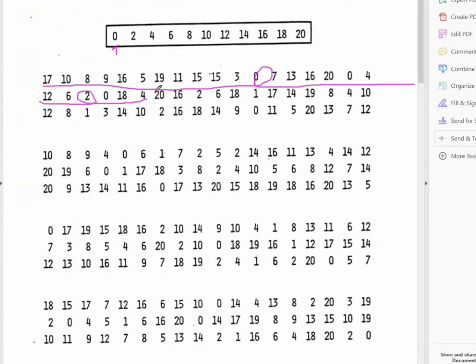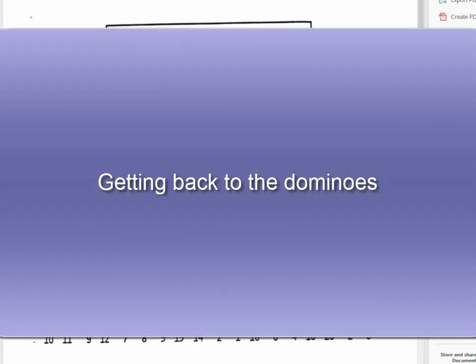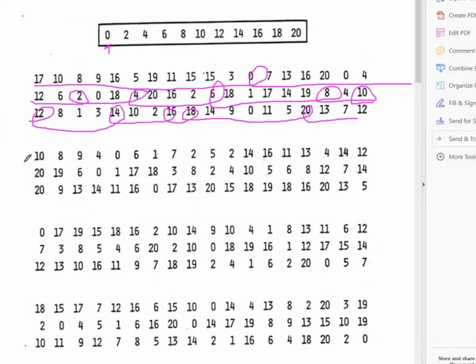So I'm going to go like this. Zero, two, four, six, eight, ten, twelve, fourteen, sixteen, eighteen, twenty. And I'm going to do it again.